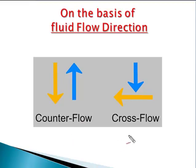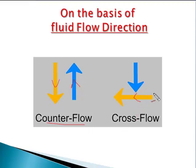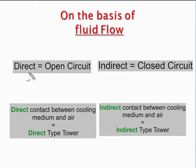On the basis of fluid flow direction, cooling towers are classified into two types: counter flow and cross flow. When hot and cold fluids flow in opposite directions, it is known as counter flow — air flows upward and hot water flows downward. When hot water flows horizontally and air flows vertically from top to bottom, this type is known as cross flow cooling tower. On the basis of contact type, there is direct and indirect type. In a direct type, open circuit is used — air and fluid are mixed together. In an indirect type, both fluids flow through tubes and heat transfer takes place only through surfaces.